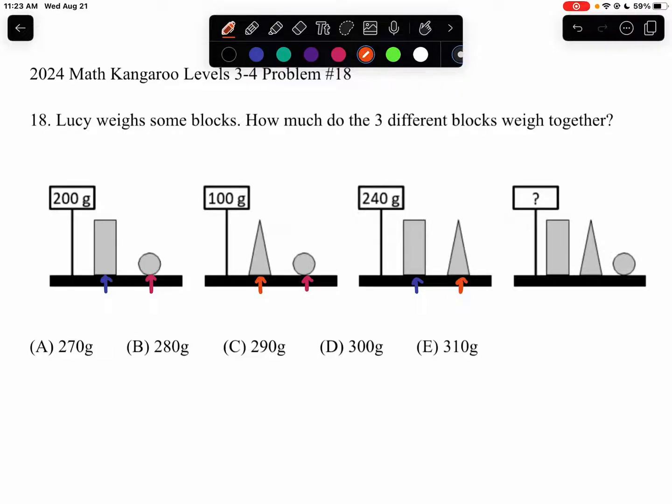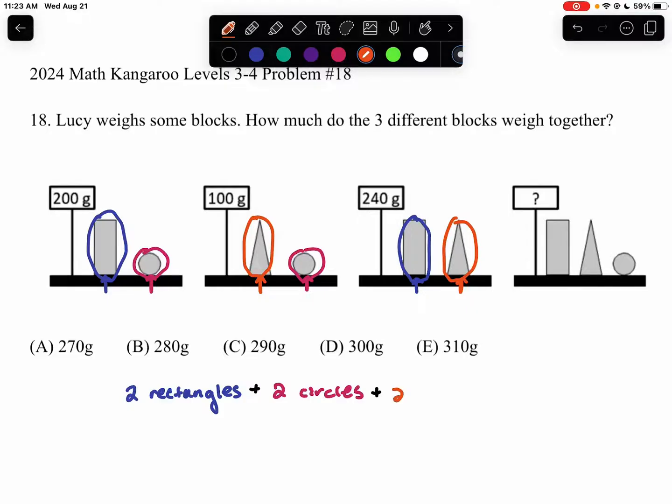What we notice when we look at all these different scales is that in total, we have one, two rectangles plus one, two circles plus one, two triangles.